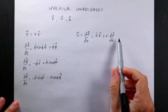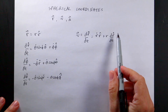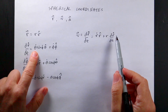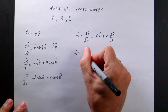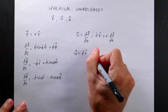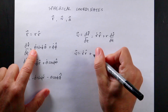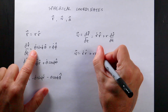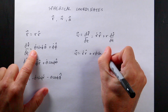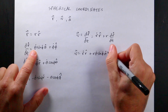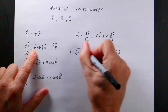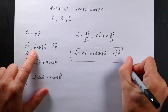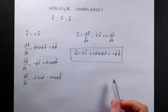In Cartesian coordinates dx-hat/dt is zero, but I already computed dr-hat/dt in the previous video. So I get v equals r-dot r-hat plus r times that result, which gives r theta-dot sine phi theta-hat plus r phi-dot phi-hat. And that is my velocity in spherical coordinates.